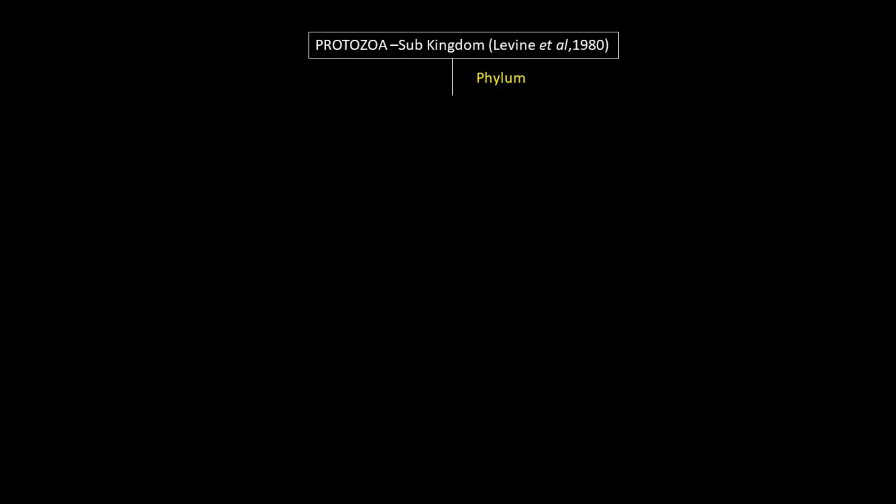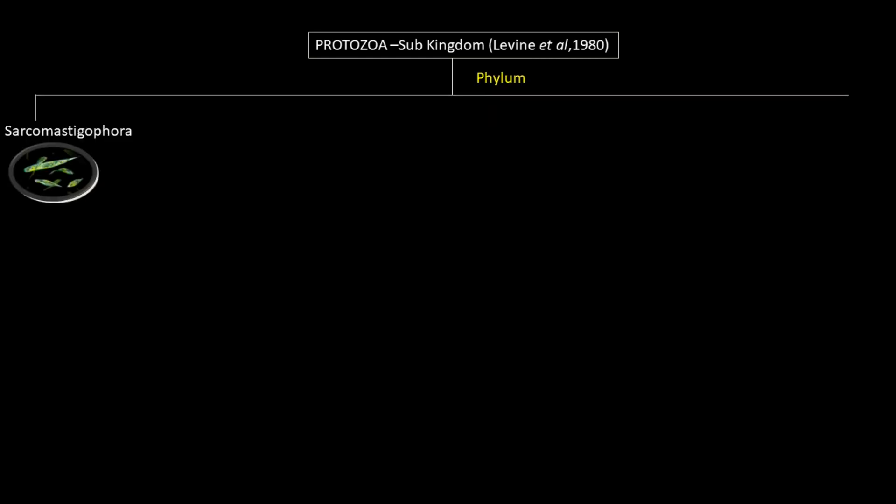Protozoa as a sub-kingdom according to Levine et al. 1980. The major phyla are Sarcomastigophora — an excellent example being Euglena — then Microspora, with Nosema sp. as an example.